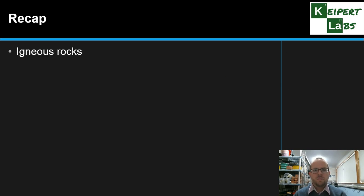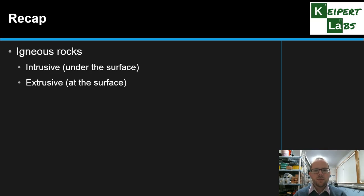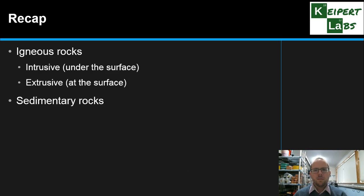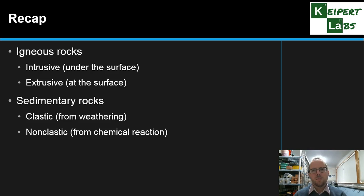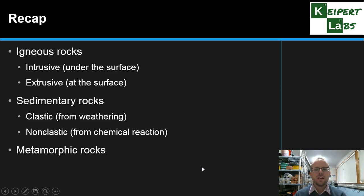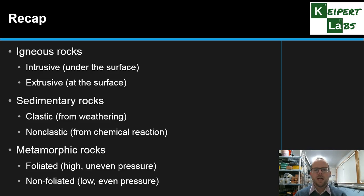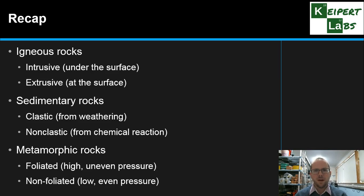To recap: igneous rocks include intrusive, which form under the surface, and extrusive, which form at the surface. Sedimentary rocks include clastic from physical weathering and non-clastic from chemical reactions. Metamorphic rocks include foliated from high uneven pressure and non-foliated from low even pressure. Thanks very much for watching. Bye for now.